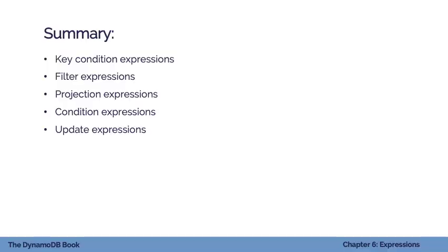That wraps up chapter six on DynamoDB expressions. To recap: the key condition expression is used on query operations to identify the item collection and specific items to fetch. Filter expressions filter out items from a query or scan — they won't save bad design patterns but help in some situations. Projection expressions operate on specific attributes within an item, filtering out unwanted attributes. For write expressions, the condition expression is evaluated before a write and cancels it if false. The update expression specifies which attributes to change in an update. In the next chapter, we'll cover data modeling with DynamoDB.